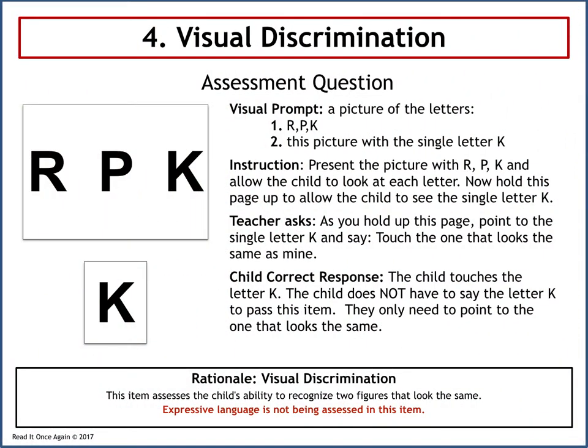The fourth skill in the curriculum-based assessment is visual discrimination. The visual prompt is a picture of the letters R, P, and K. The assessor holds up a card showing a single letter K and asks the child to touch the one that looks the same. The child's correct response is to touch the letter K — they do not have to say the letter K to pass. The rationale: this item assesses the child's ability to recognize two figures that look the same. Expressive language is not assessed in this item, but visual discrimination is an important skill to master for a child to acquire expressive speech and reading skills.